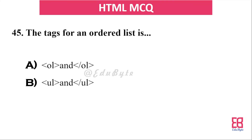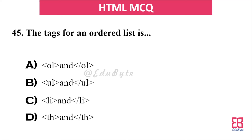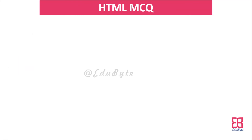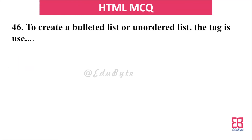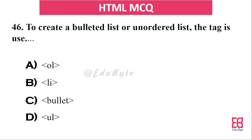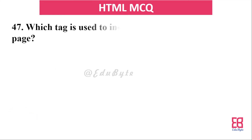Question forty-one: what is the tag for an ordered list? The correct answer is `<ol>`. Question forty-two: to create a bulleted or unordered list, which tag do you use? The correct answer is `<ul>` — the ul tag creates an unordered bulleted list.